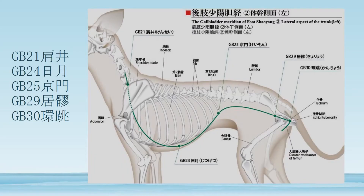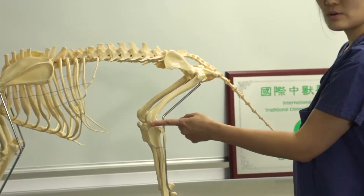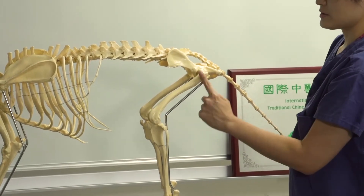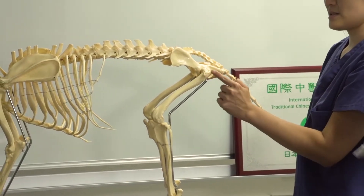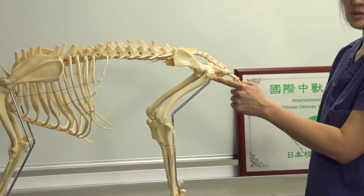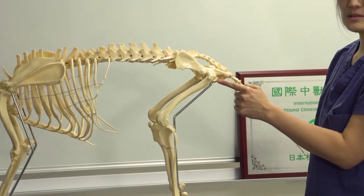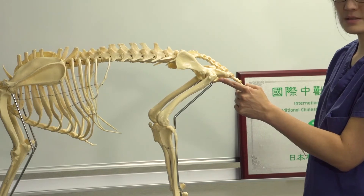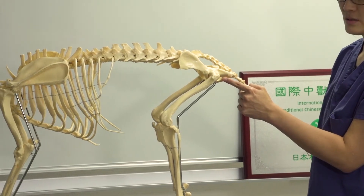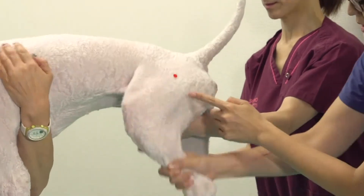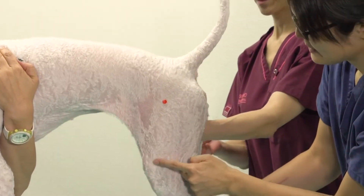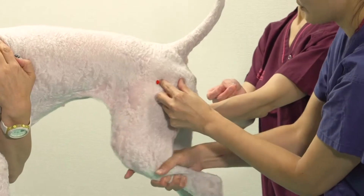GB30 is in the depression caudal to the greater trochanter of the femur.